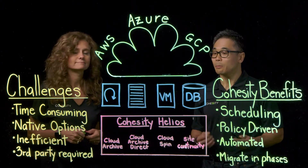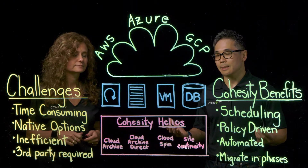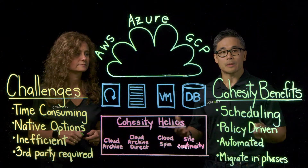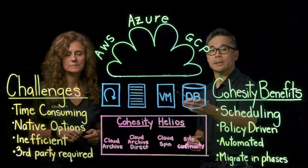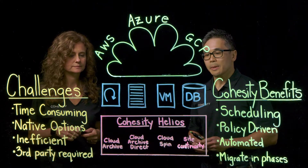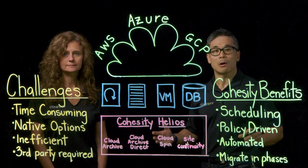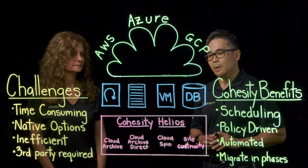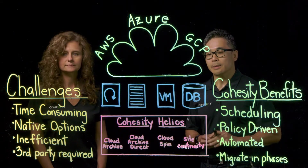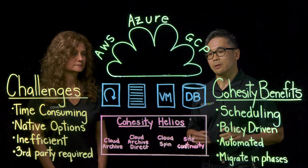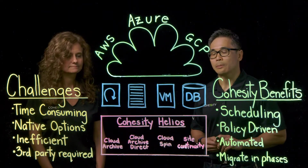Here at Cohesity, we have multiple options for customers to move different data sets to the cloud. One of the great things about Cohesity is we have the Cohesity Helios platform, which runs all our services and all our products. It gives you a single platform to manage your data and a single UI to run all these different services, so there's no complexity of having different tools on board.